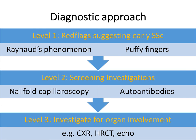The diagnostic approach to working up a patient in whom you suspect systemic sclerosis: red flags suggesting early SSc would be Raynaud's phenomenon or puffy fingers. If a patient has one or two of these features, you would want to order an autoantibody profile or nail-fold capillaroscopy. The next level of workup would be to investigate for typical organ involvement with a baseline chest X-ray or HRCT scan of the lungs, for example.